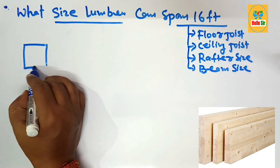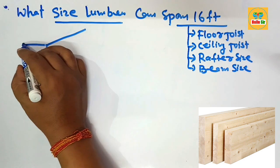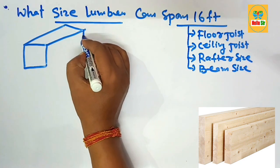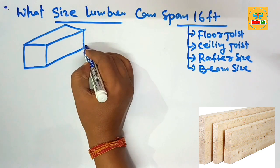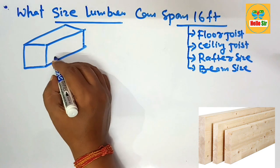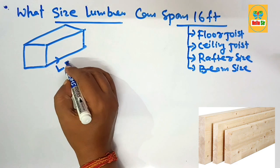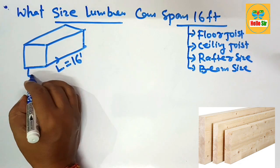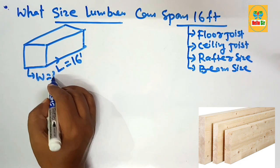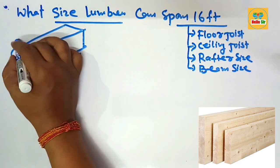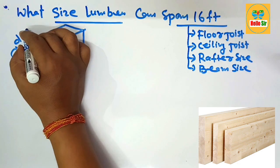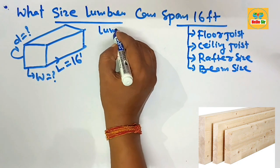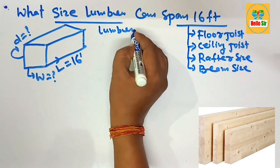First, understand the dimensions for wood beam size — what will be the width, the depth, and the length. This rough diagram shows the length of a span, which is given as 16 feet. This is the width you have to find out.